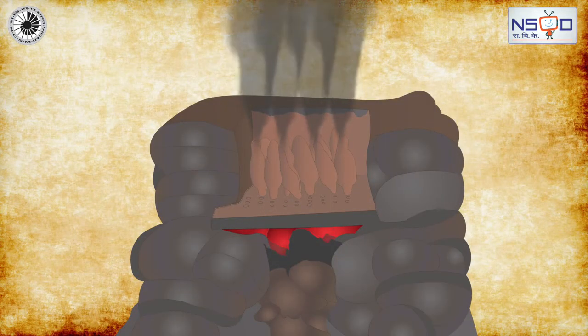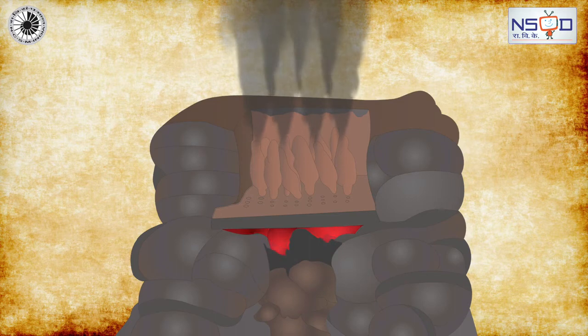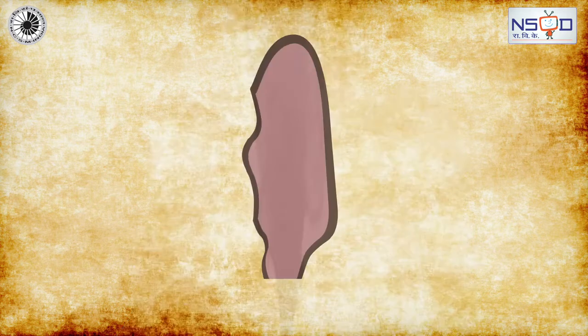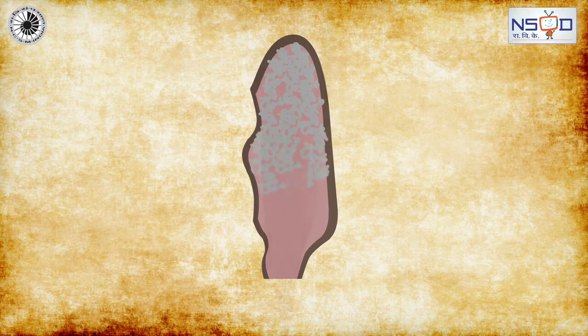The retorts were used to trap the vaporized gas containing zinc. These retorts were later cooled to extract zinc.